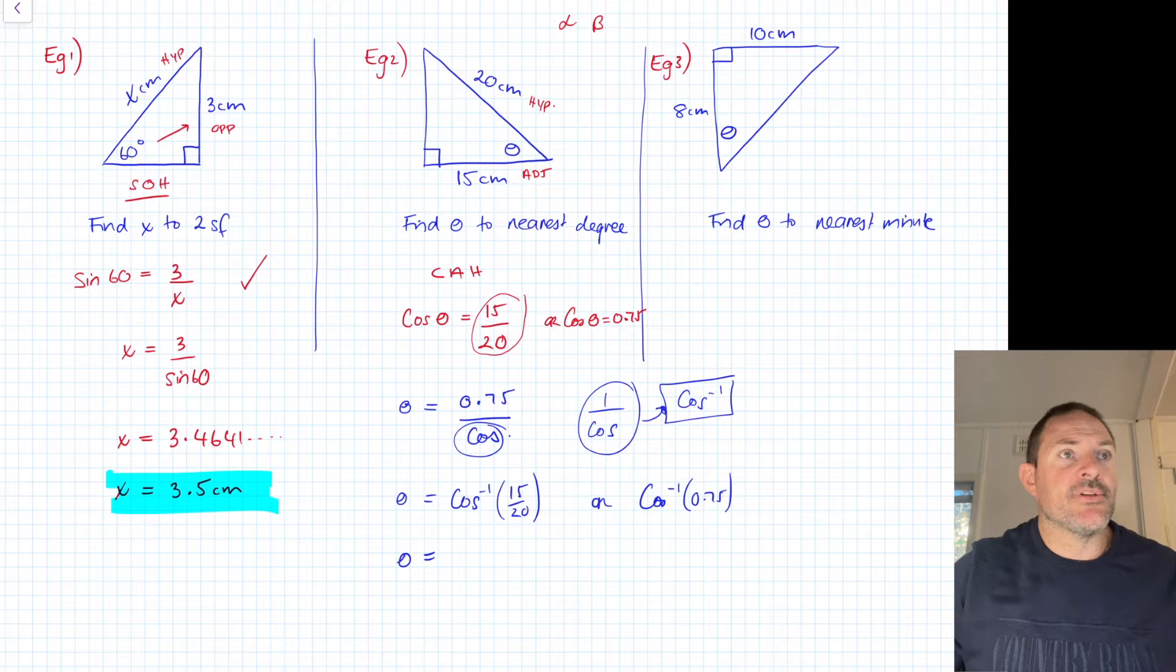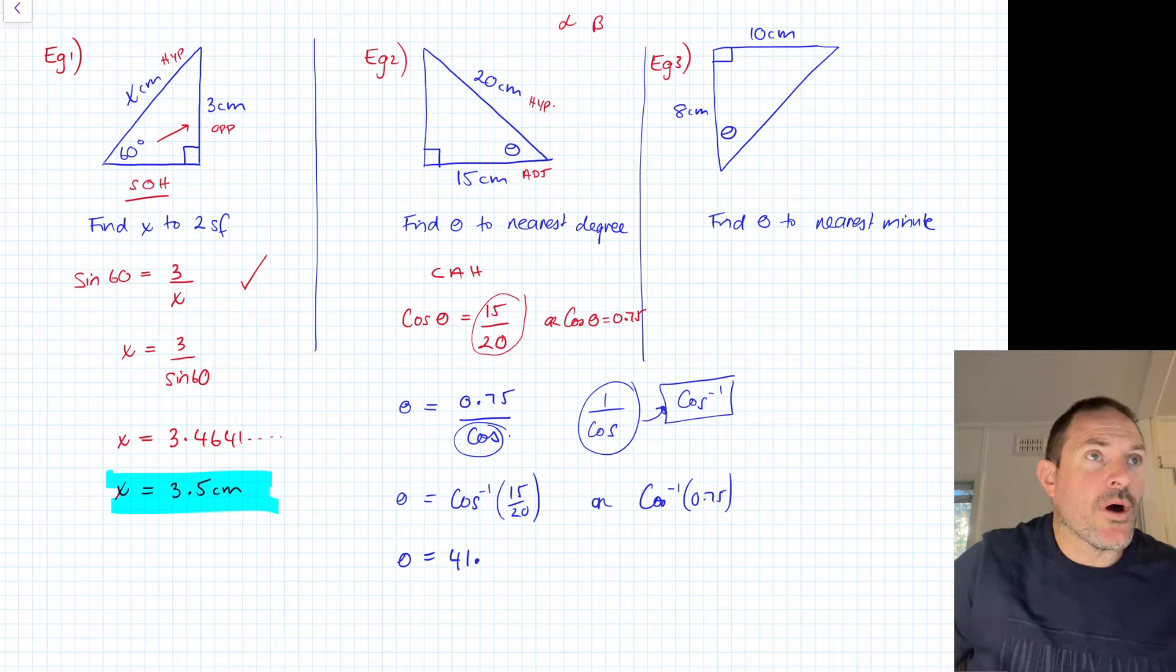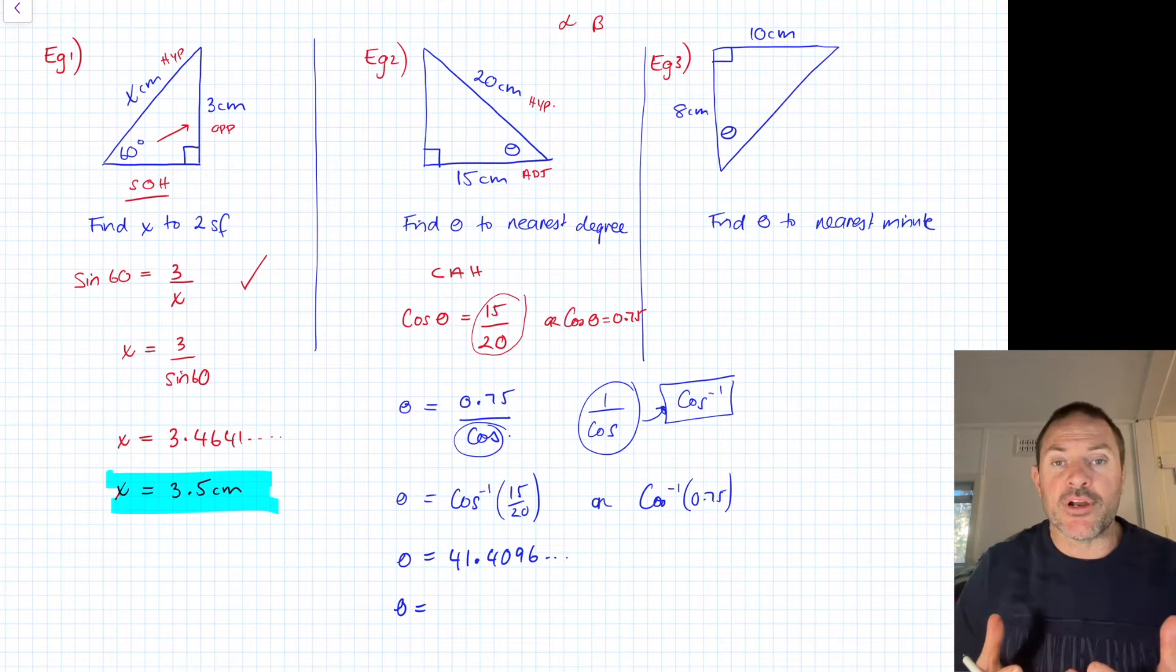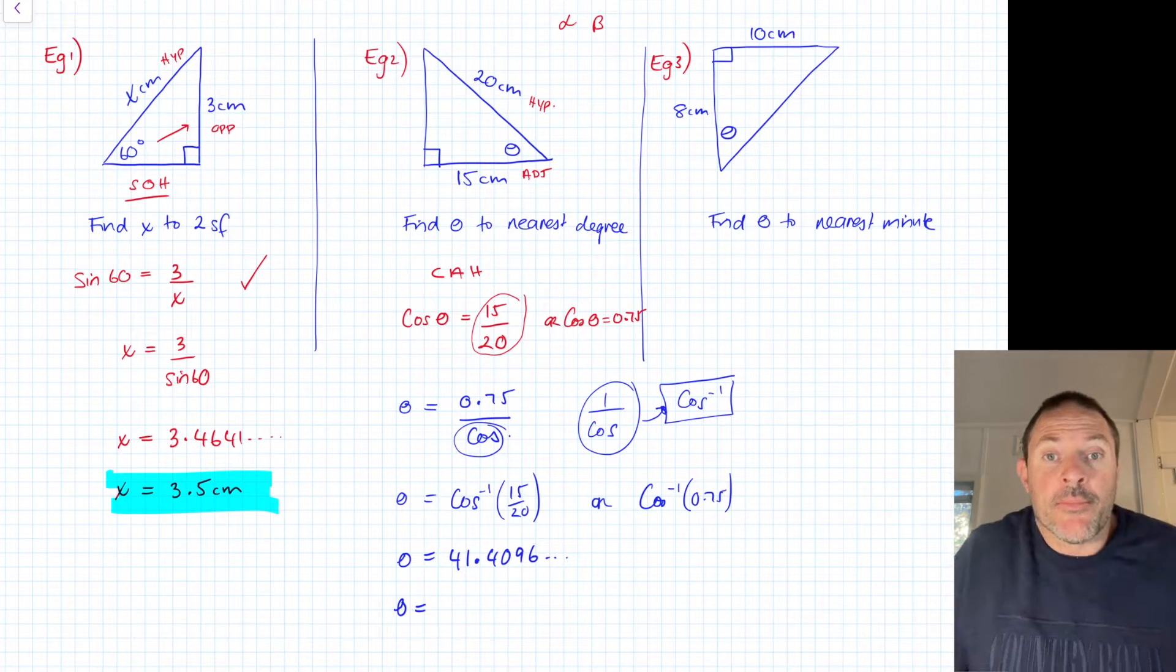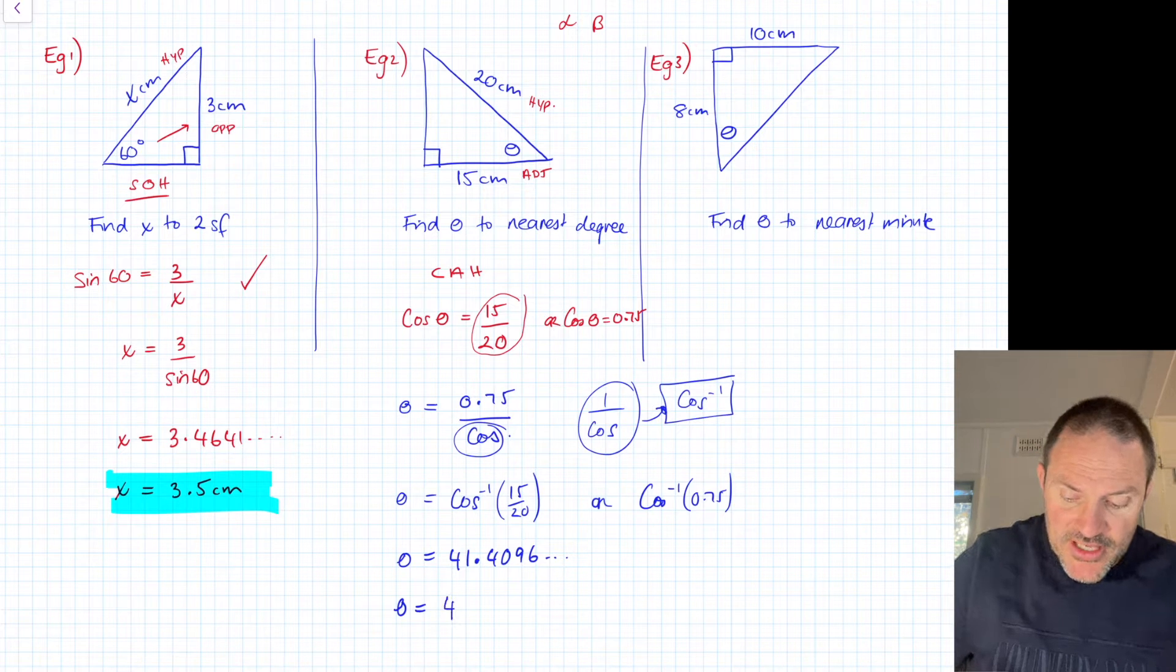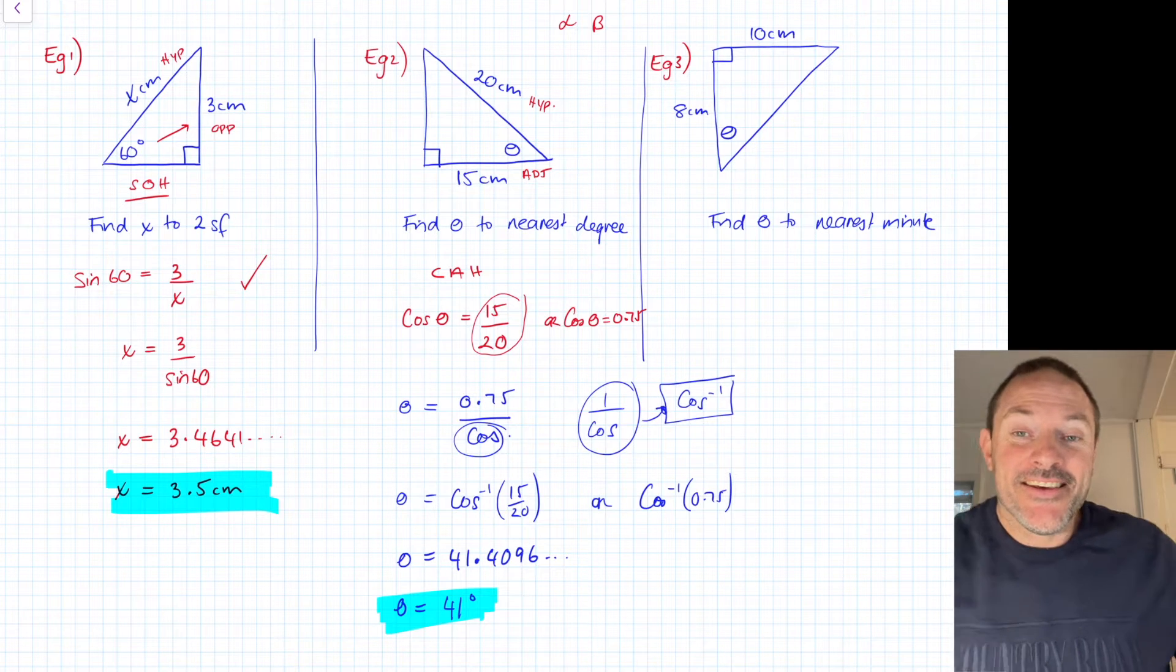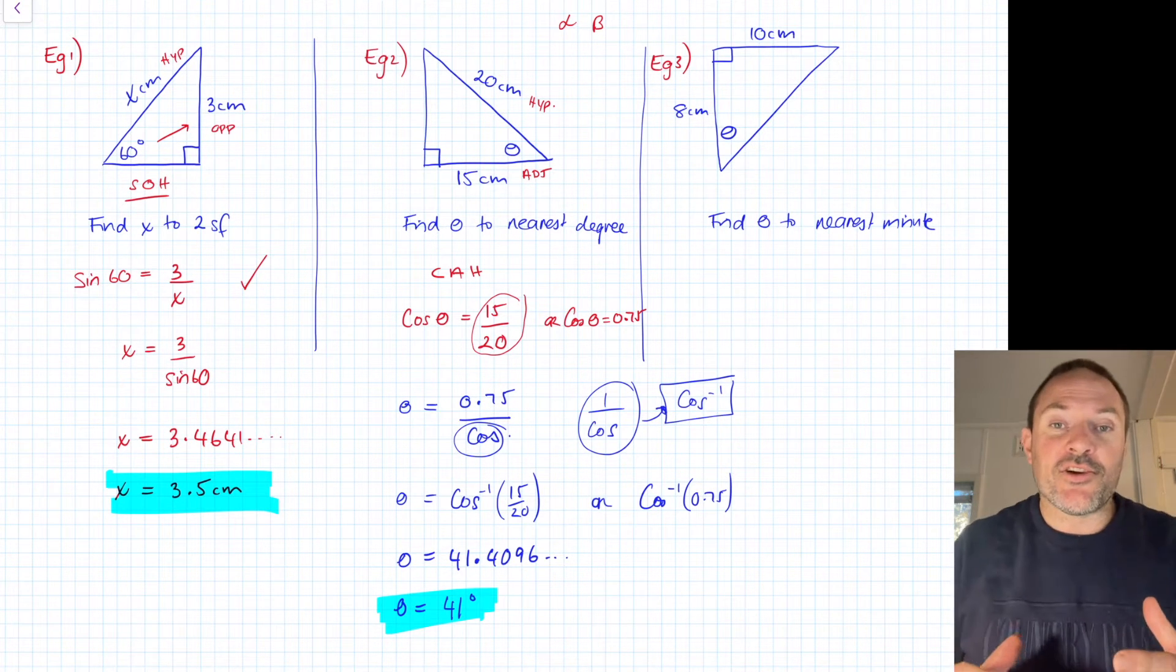In this instance, I'm going to grab my calculator out. I'm going to press shift, and I'm going to type in cos. You'll see it comes up as cos negative 1. I'm going to type in 15 over 20, you could do your decimal or simplified fraction. I'm going to type it in, and it says 41.4096. My question said to the nearest degree, which is the nearest whole number, so this would just be 41 degrees.